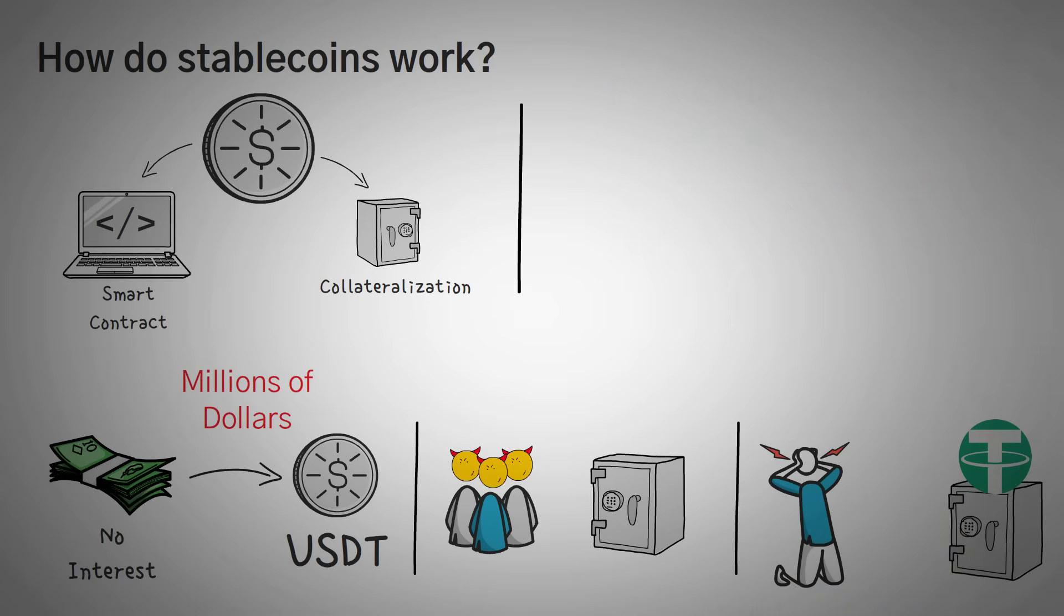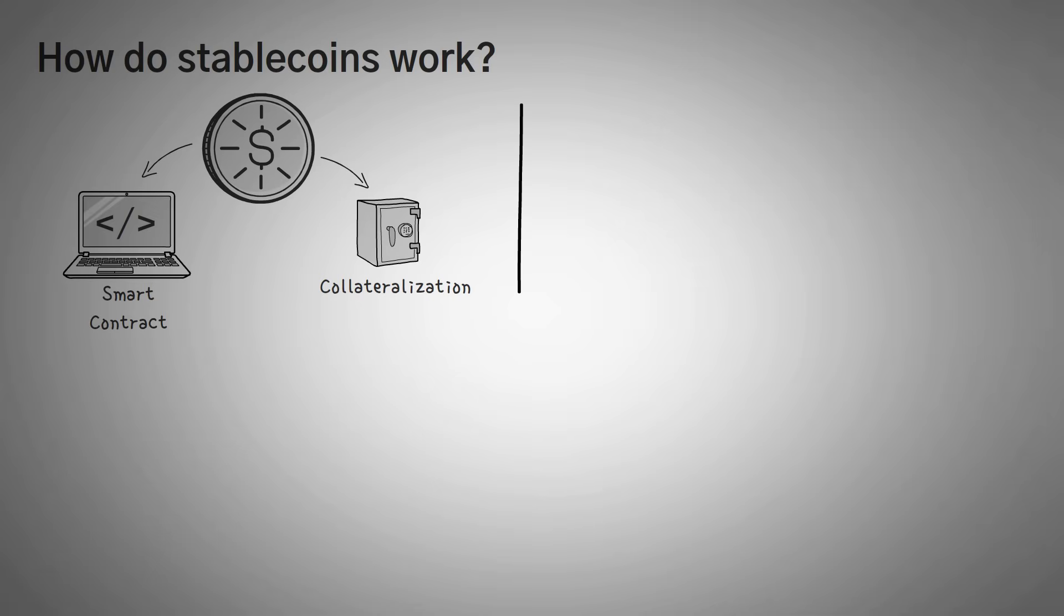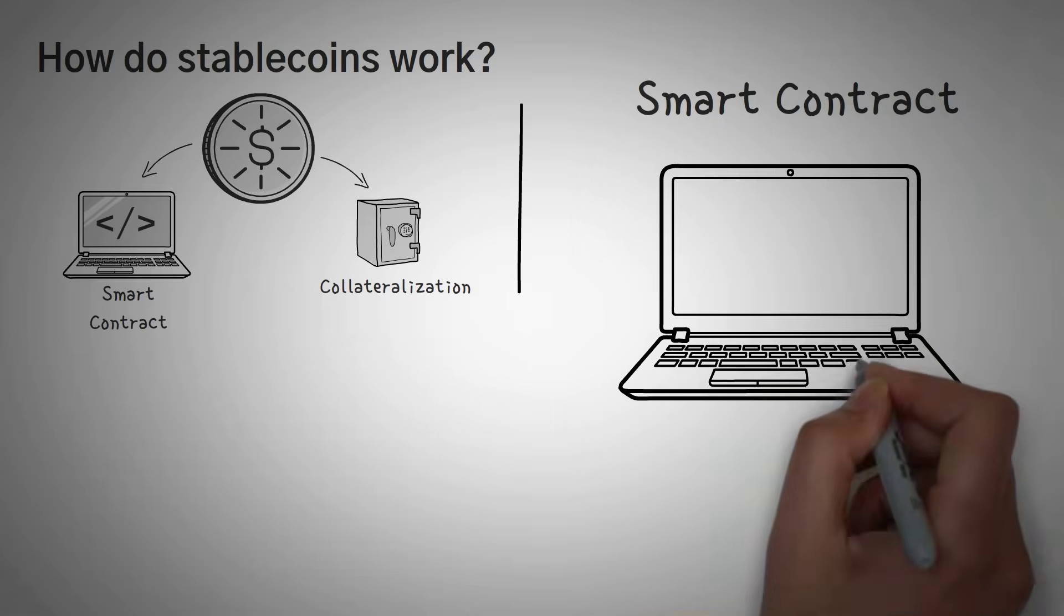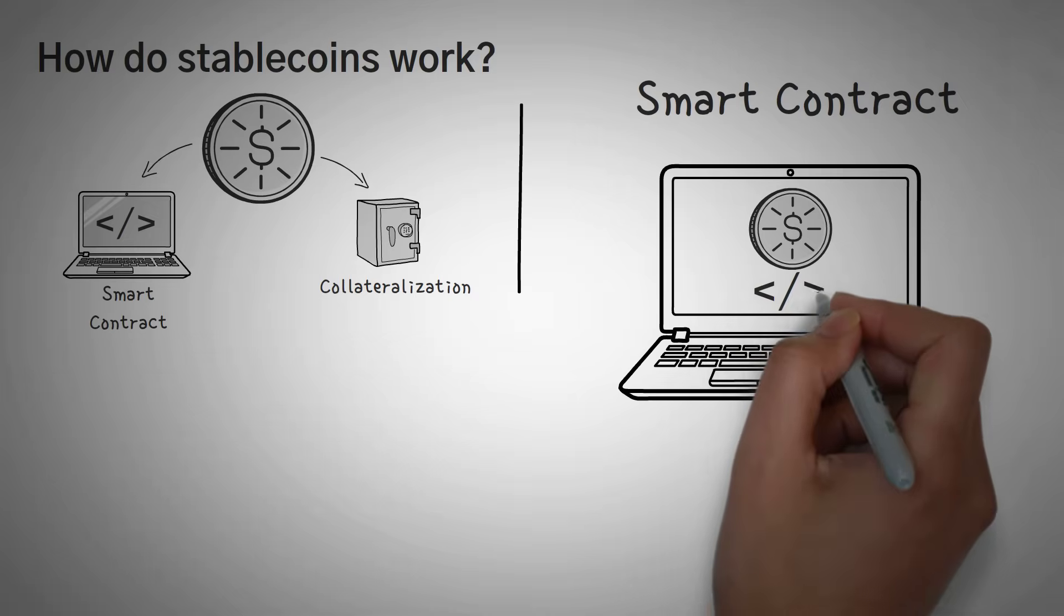Let's move on to the second method. Because as an alternative to the fiat collateralization method, some stablecoins are controlled by smart contracts. Some people call this algorithmically pegged stablecoins. Now, the benefit of this method is that it is very easy to audit. You just take a look at the smart contract code. Another benefit is that there's no physical assets to steal.